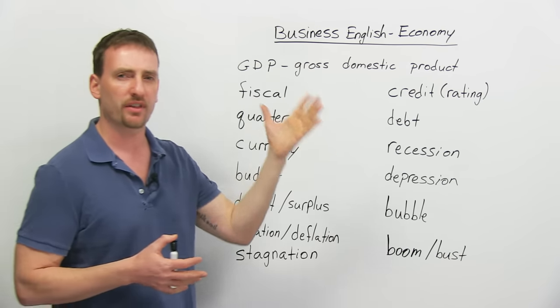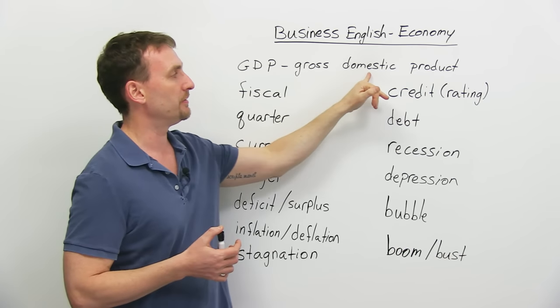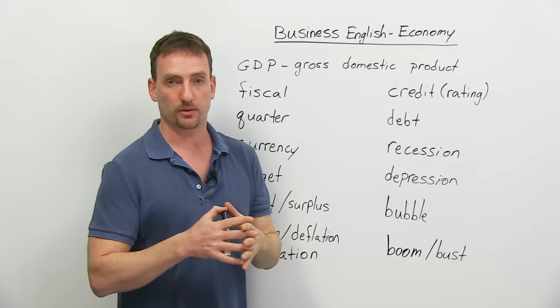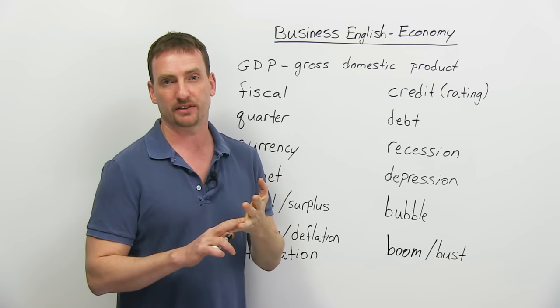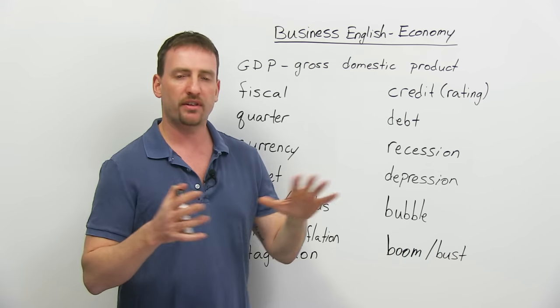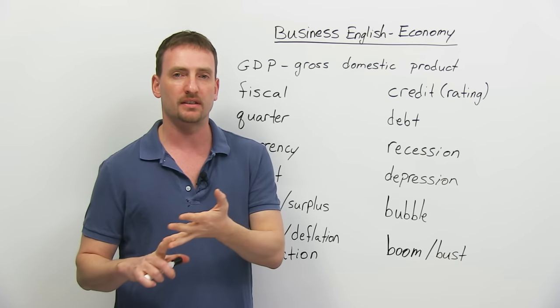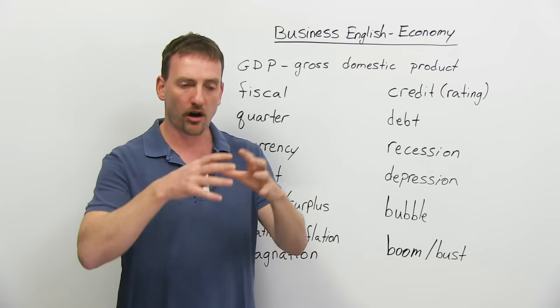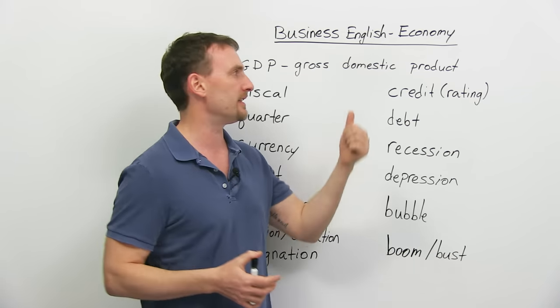We're going to start with GDP, because everything somehow relates to GDP. Gross domestic product. What is this? This is the total value, the total monetary value of goods and services produced within a country. Everything that the country produces from toilet paper to airplanes, and services from massage to heart surgery, all the money that's made from these goods and services together adds up to the GDP.